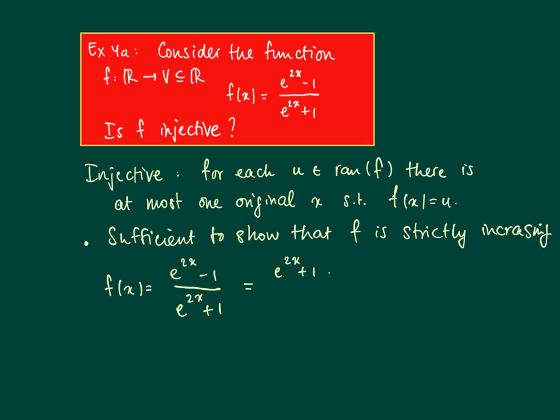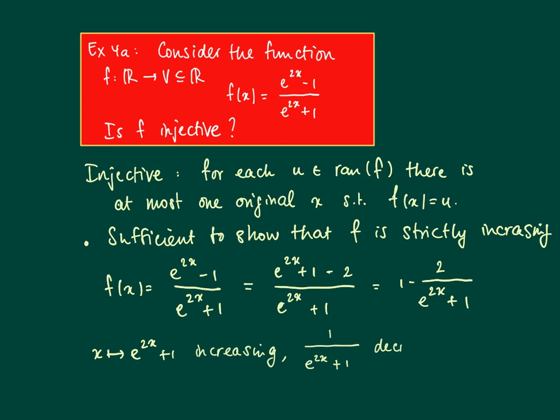What we might do is we might split off 1. What we do is in the numerator we add 1 and we subtract 1. So we see that actually here you get 1 minus 2 divided by e to the power 2x plus 1. We see that the numerator is increasing, so the reciprocal of the numerator is decreasing. 1 over e to the power 2x plus 1 is decreasing.